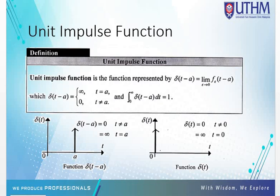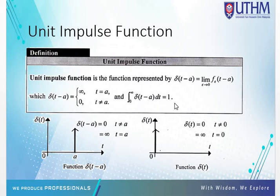Hello everyone. In this session I will share with you another non-continuous function: the unit impulse function. Since the unit impulse function was introduced by an English physicist, it is sometimes known as the Dirac delta function. The unit impulse function is represented by delta(t minus a), defined as the limit as epsilon goes to 0 of f_epsilon(t minus a). Delta(t minus a) equals infinity when t equals a, and 0 when t is not equal to a. The integration from 0 to infinity of delta(t minus a) dt equals 1.